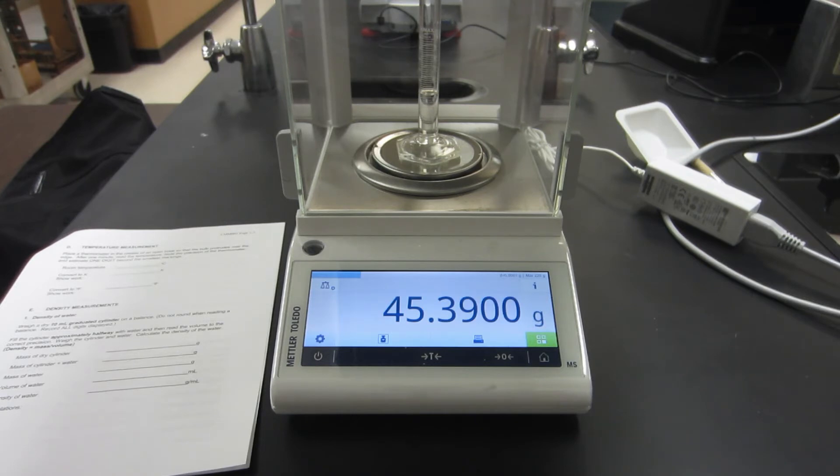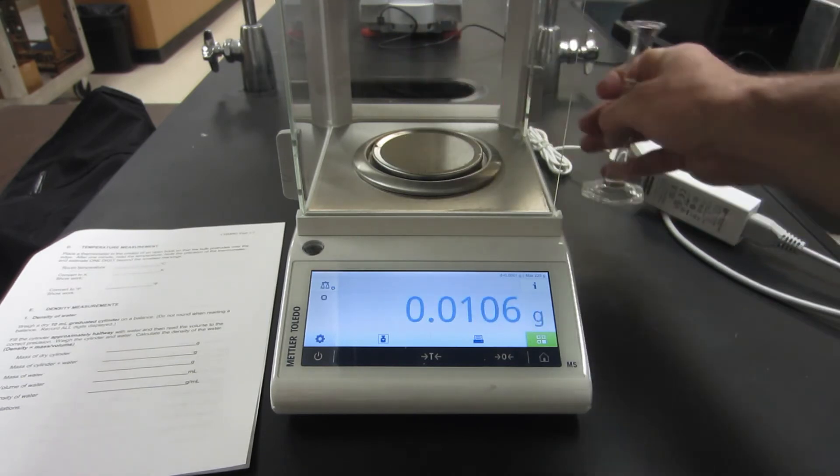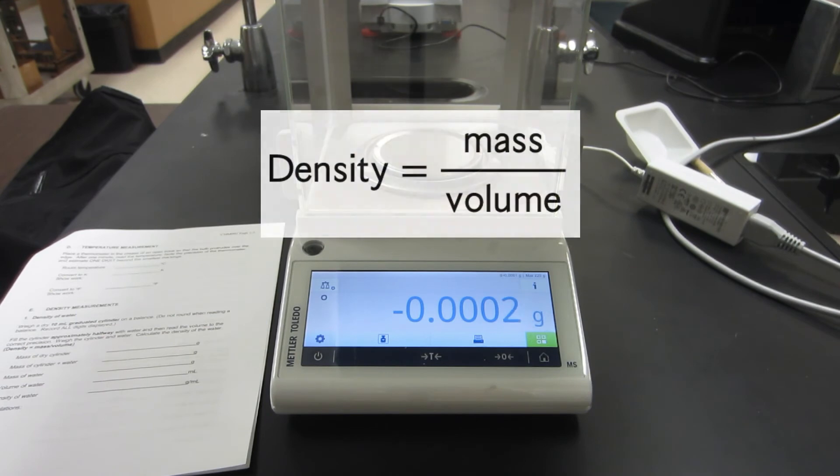There's the mass of the water plus the graduated cylinder, so you can record that on your report sheet. You would subtract the two values to get the mass of the water.